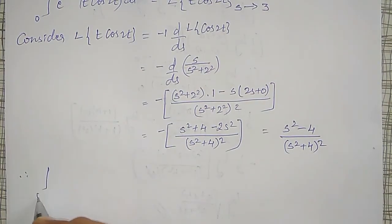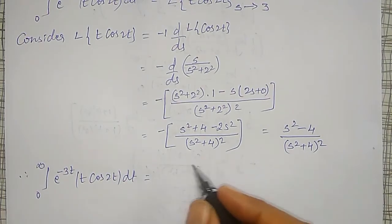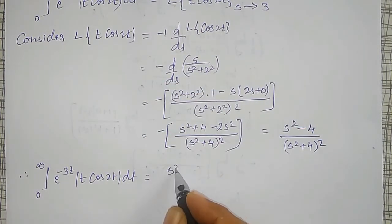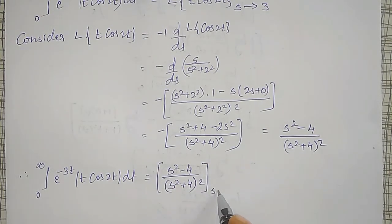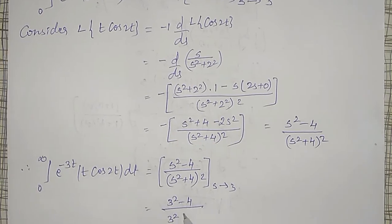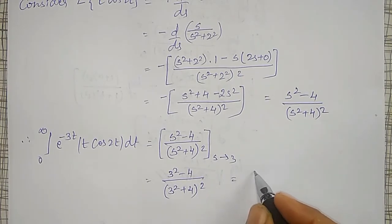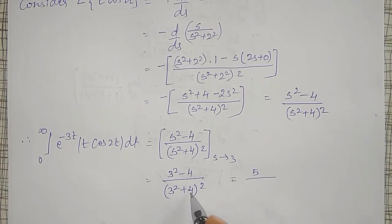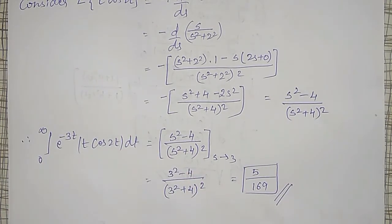Therefore, the integral from 0 to infinity of e^(-3t) · t·cos(2t) dt equals the Laplace transform of t·cos(2t) which is (s²-4)/(s²+4)², with s replaced by 3. That gives (9-4)/(9+4)² = 5/13² = 5/169. This is the required answer.